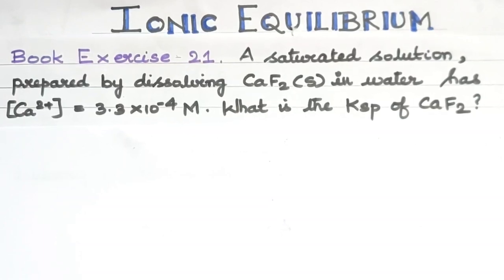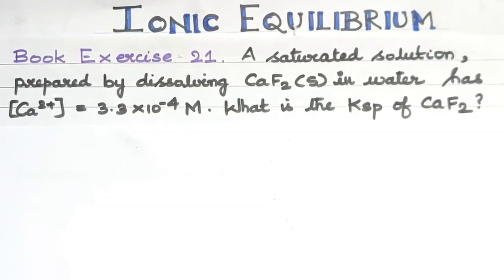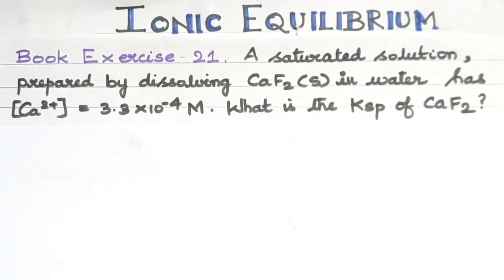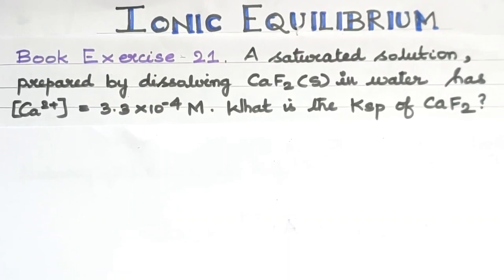Hello Media Students. In this video we will solve Ionic Equilibrium Chapter Book Exercise Question No. 21. A saturated solution prepared by dissolving calcium fluoride solid in water has a Ca²⁺ ion concentration equal to 3.3×10⁻⁴ M. What is the Ksp of calcium fluoride?